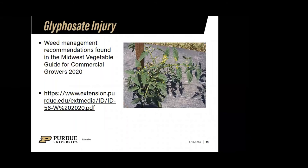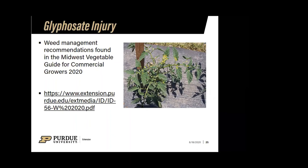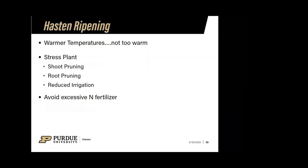Sometimes herbicide injury can look a lot like a disease. This is a picture of glyphosate injury — if you're curious whether you have this, look down into the new growth points. If you start to see yellowing in those areas, there's a good possibility you have glyphosate injury. Refer to the Midwest Vegetable Guide for weed management recommendations, and be careful with Roundup because it can damage your plants.